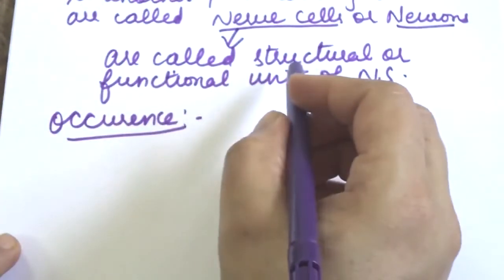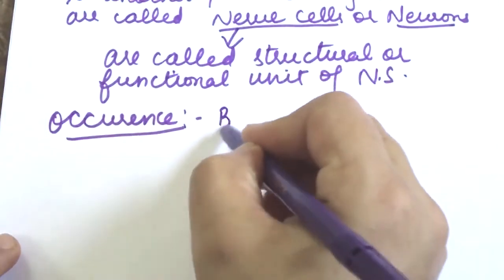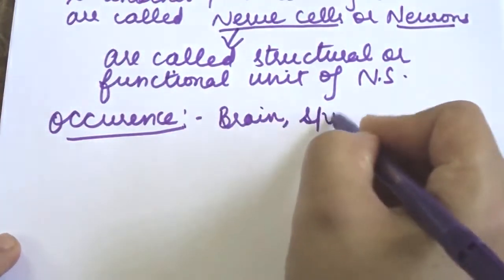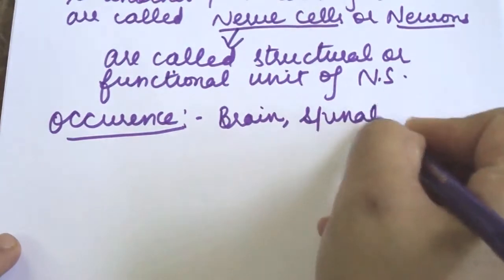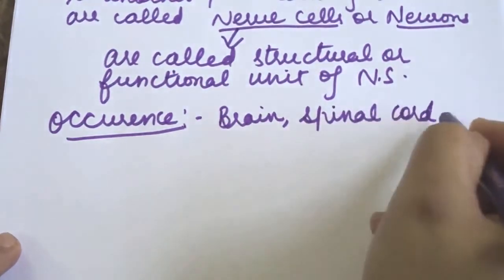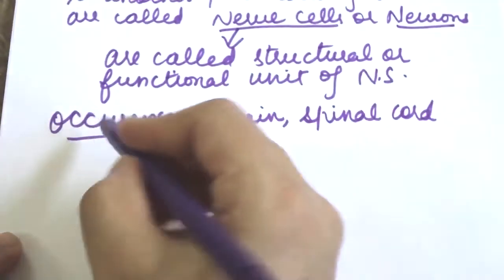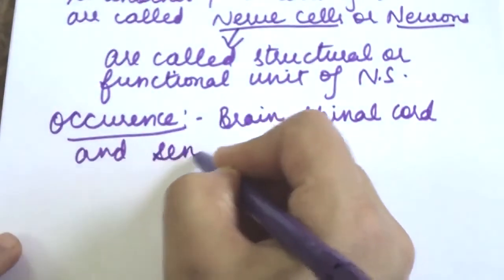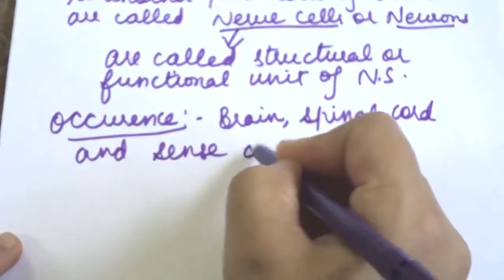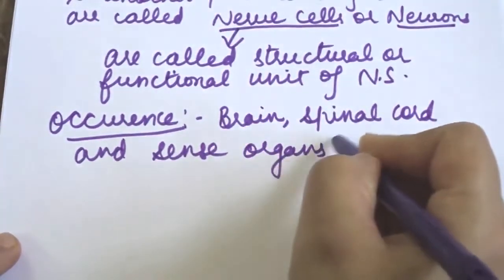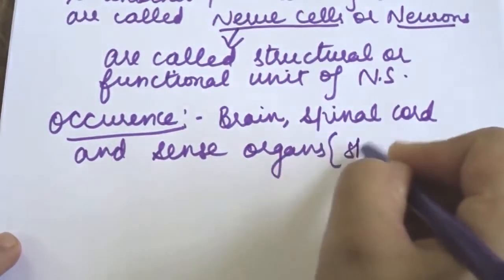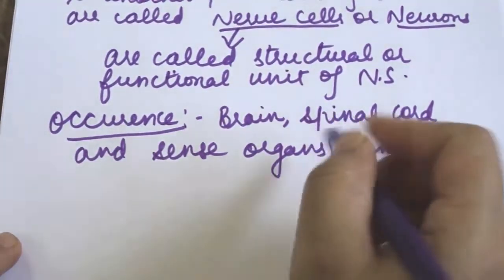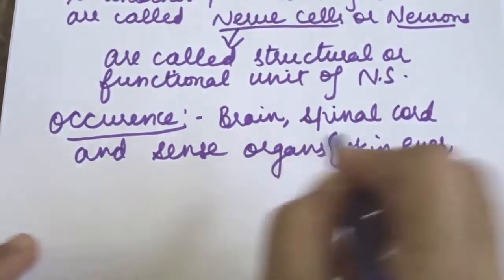Neurons are present in the brain, spinal cord, and sense organs such as the skin, eyes, and ears.